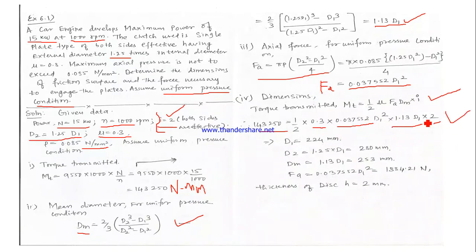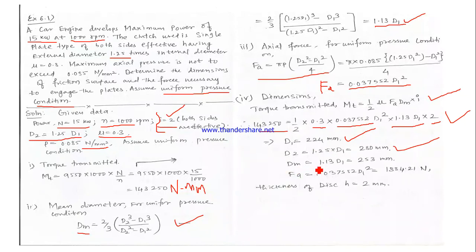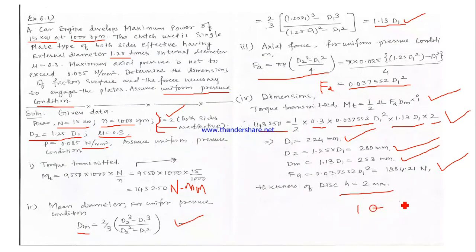Solving that equation in D1 gives D1 = 224 mm. Correspondingly, D2 = 1.25 × 224 = 280 mm, Dm = 1.13 × 224 = 253 mm, and axial force FA = 1884.21 N. Thickness is assumed as 2 mm (within the 1–3 mm range). This problem carries about 6 to 8 marks and the steps are straightforward.